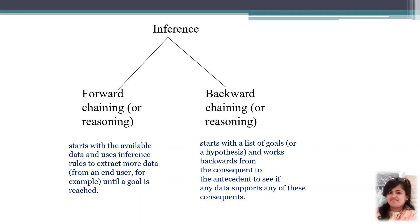What we are going to do is draw some inference. Inference can be drawn from forward chaining or reasoning — that is, starting with available data and using inference rules to extract more data until a goal is reached. You have certain information available and you apply inference rules, extracting more data until the goal is reached. You start from one point and aim to reach the goal — that is forward chaining or reasoning.